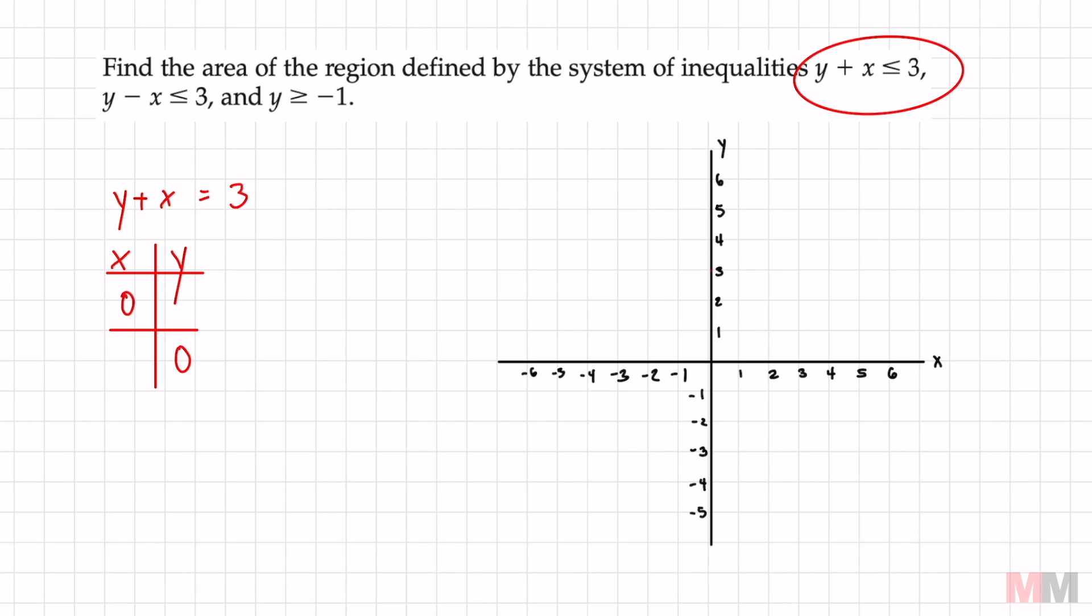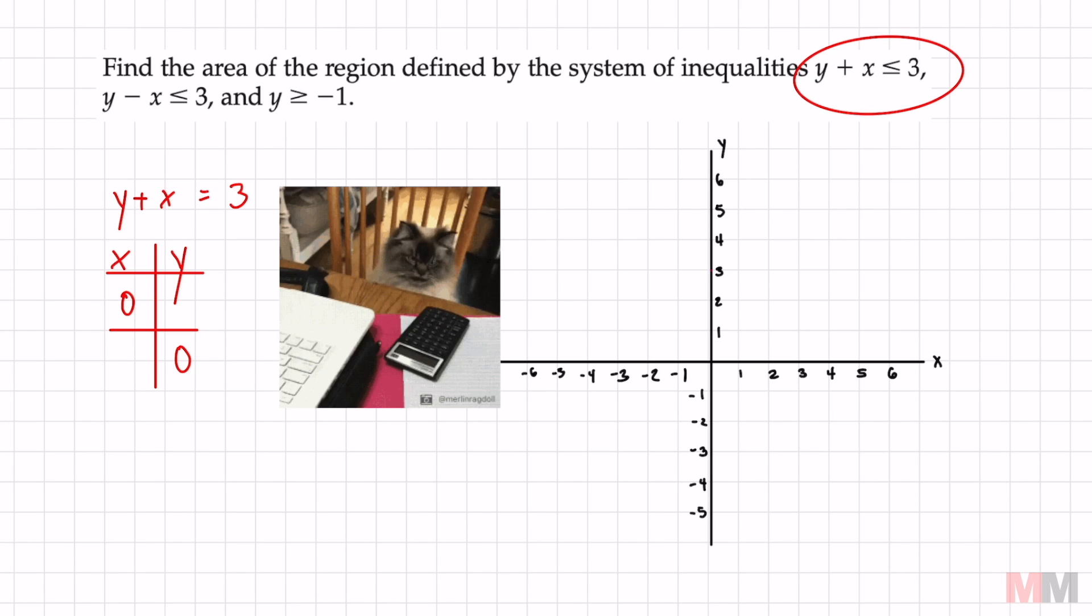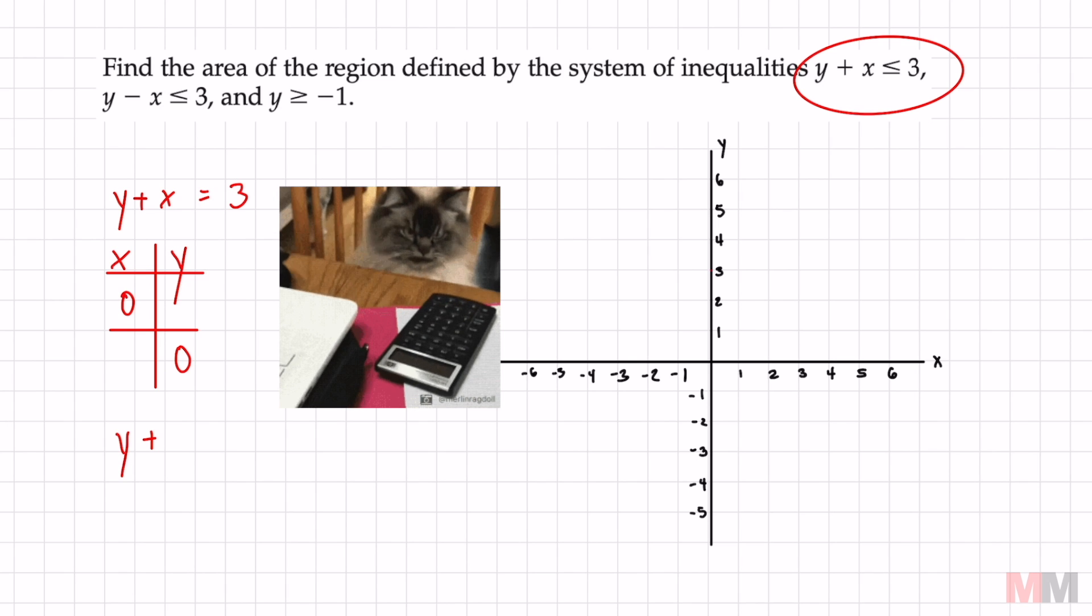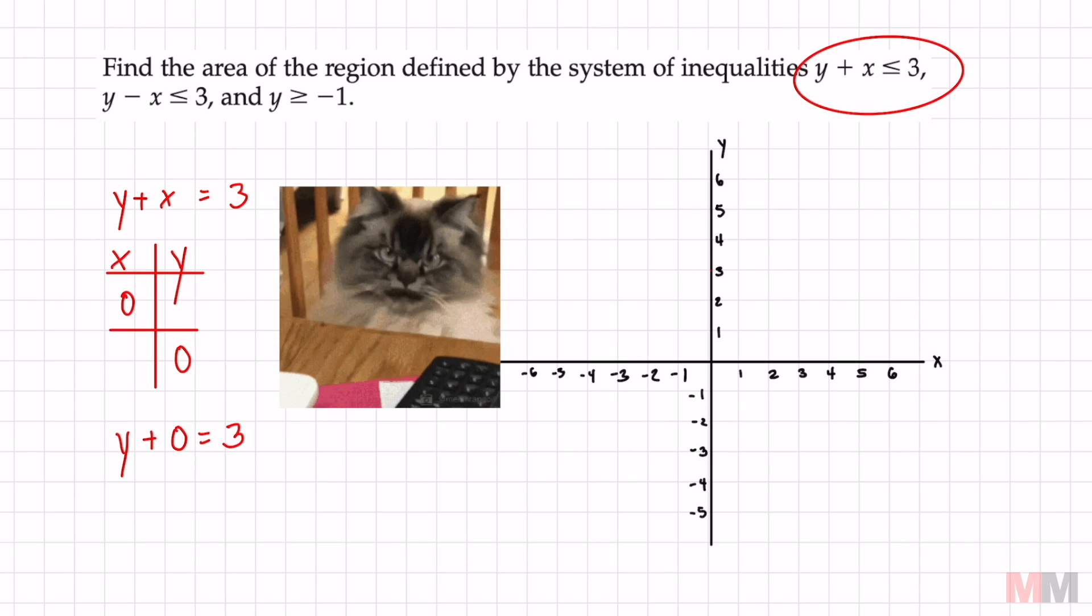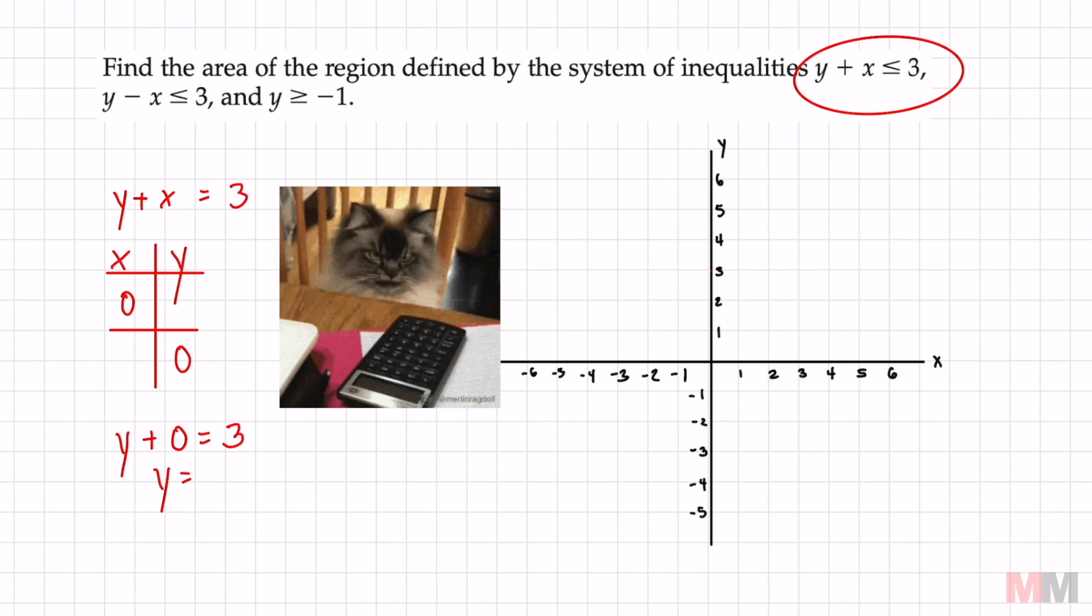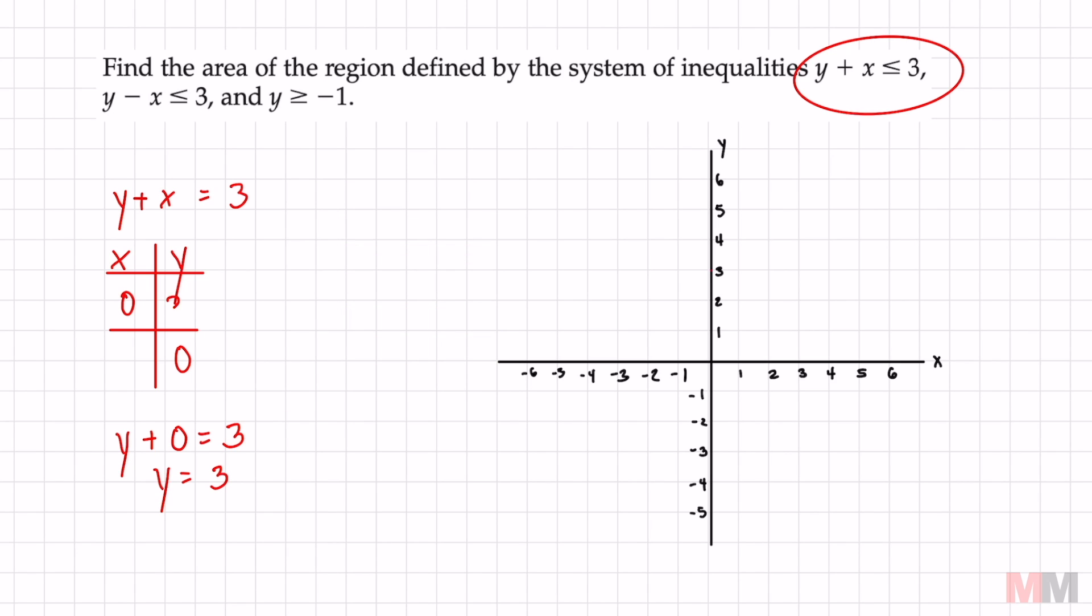That means I'm going to plug in zero for x first, find a y value that's going to give me a point and you can do it in your head. If I put zero in here you don't need a calculator and if you're using a calculator for this you need to work on your math. Y equals 3 goes right there.